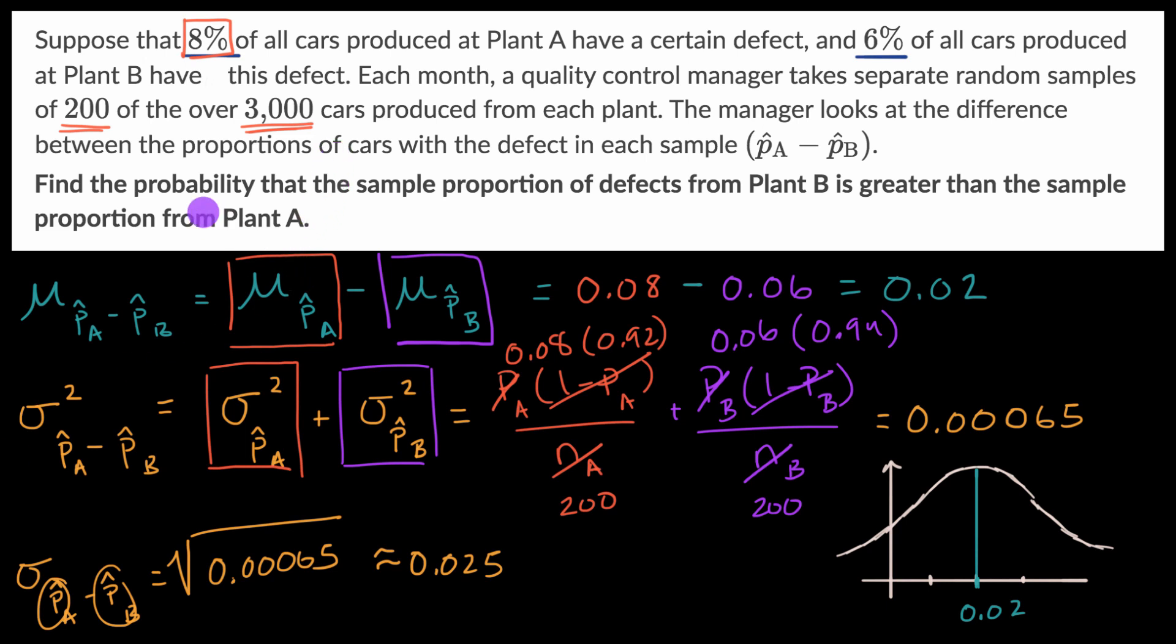So first of all, let's just interpret what this is. The probability that the sample proportion of defects from plant B is greater than the sample proportion from plant A. So the sample proportion from plant B is greater than the proportion from plant A, then the difference between the sample proportions is going to be negative. So this is equivalent to the probability that the difference of the sample proportions, so the sample proportion from A minus the sample proportion from B, is going to be less than zero.